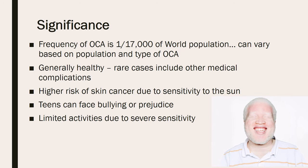People with albinism have a higher risk of skin cancer due to skin sensitivity. It may also be hard for teens to fit in due to having a different appearance, and oftentimes they may experience prejudice or bullying, especially at school. In addition, they may be limited in the activities they can participate in due to their severe sensitivity to the sun, meaning outdoor sports may not be possible without extreme protection.